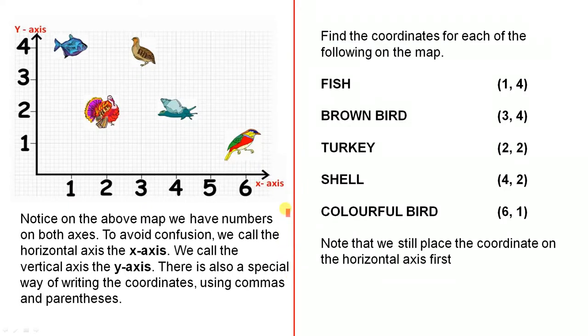Notice on the above map we have numbers on both axes. To avoid confusion we call the horizontal axis the x-axis. We call the vertical axis the y-axis. There is also a special way of writing the coordinates using commas and parentheses. So let's look at some examples.